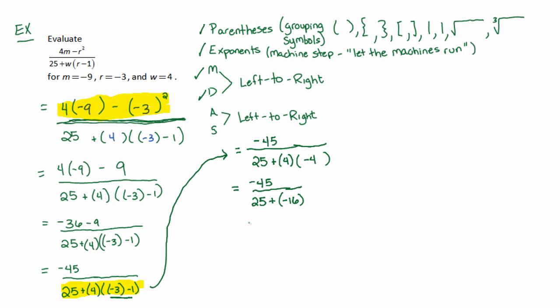Now multiplication and division is done, and I'll take care of addition or subtraction, from left to right. 25 plus negative 16 is actually the same thing as 25 minus 16, which would be 9. And so we have now successfully simplified both the numerator and the denominator, both those groups.